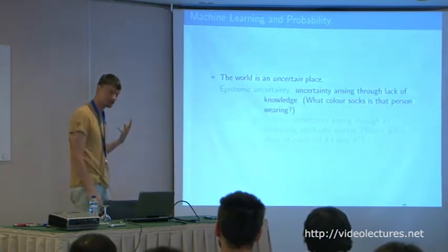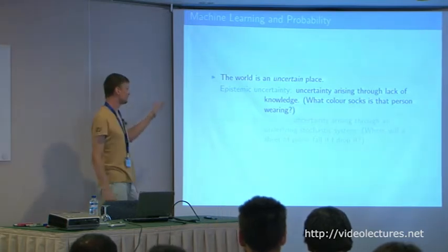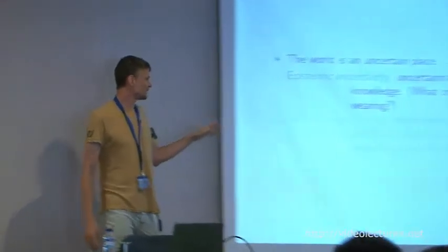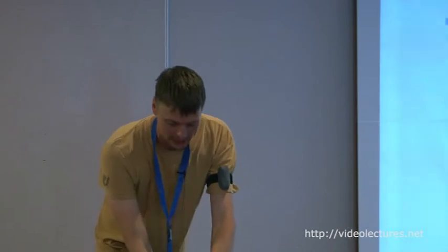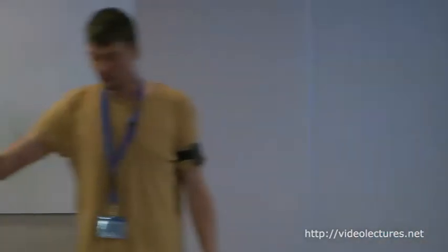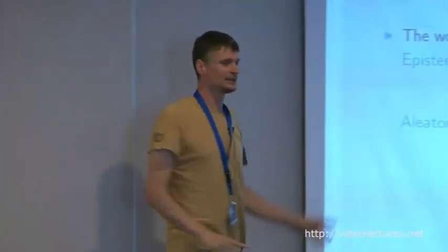Epistemic uncertainty is uncertainty arising through lack of knowledge — for example, what color socks am I wearing? Aleatoric uncertainty is uncertainty arising through an underlying stochastic system — if I take a sheet of paper and drop it, where will it fall? I could do it many times in a similar way and wouldn't be able to predict it. Those are the two broad categories of uncertainty.